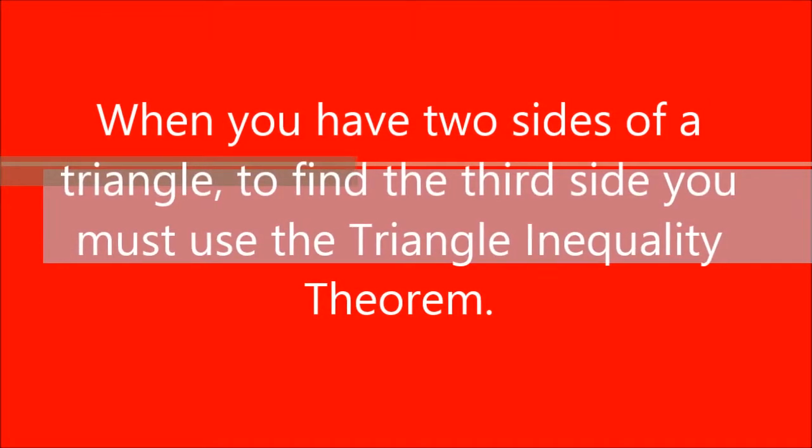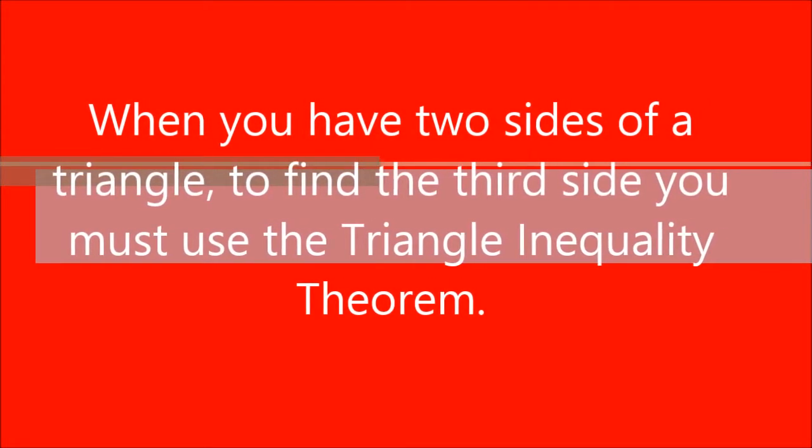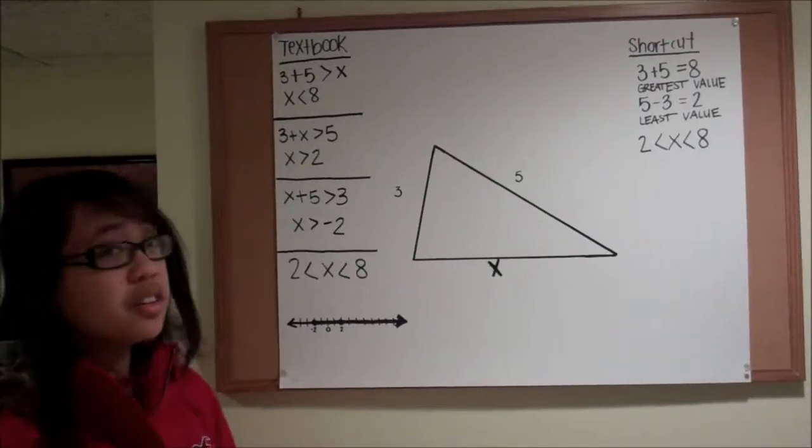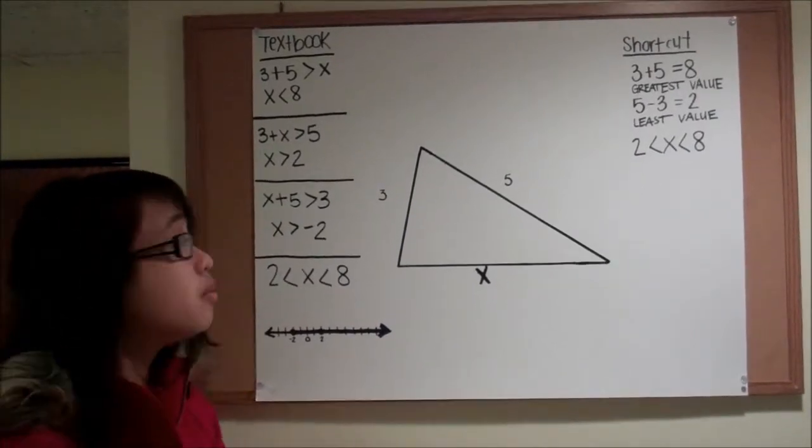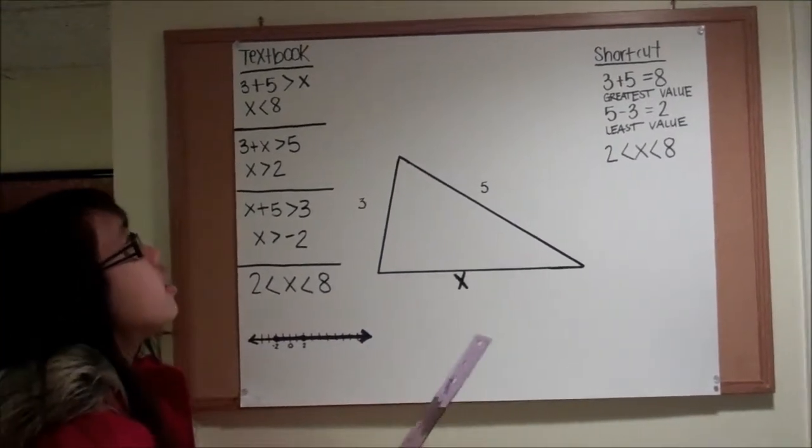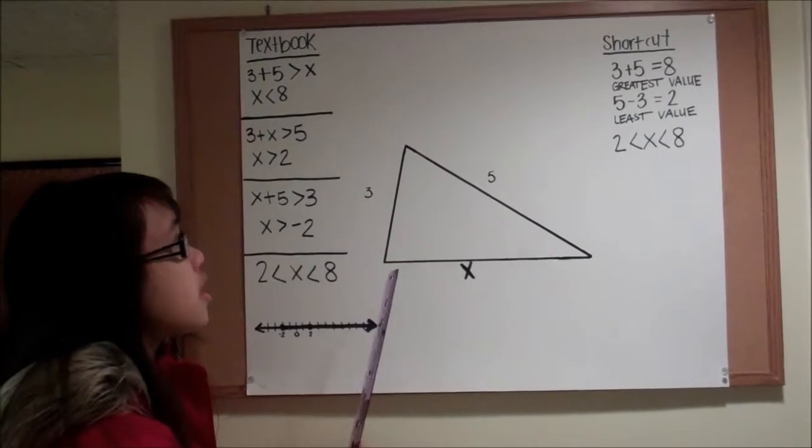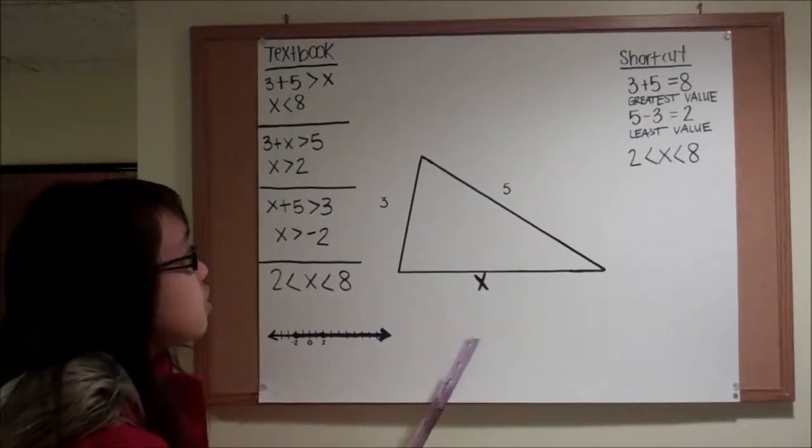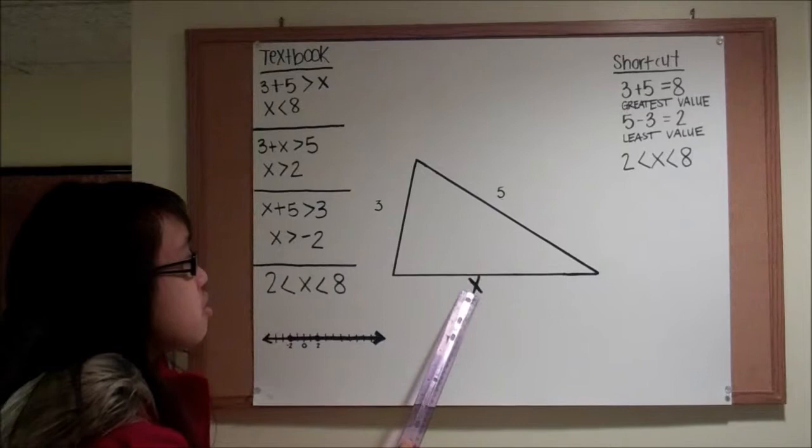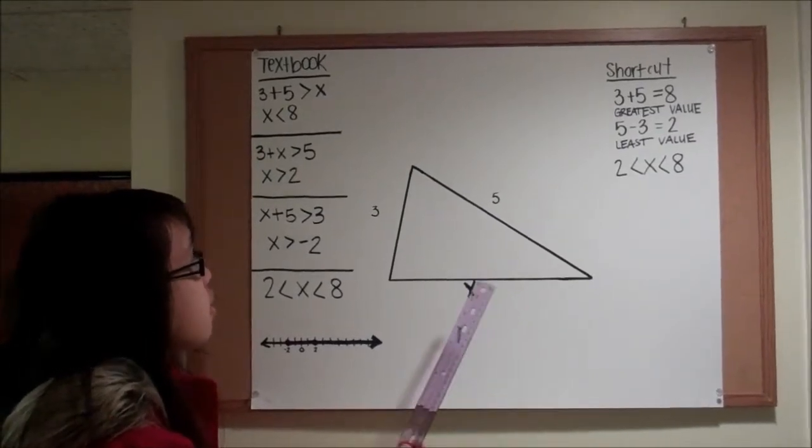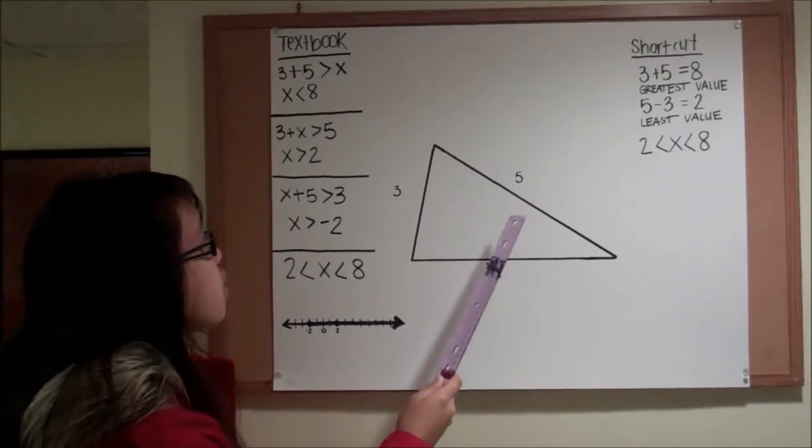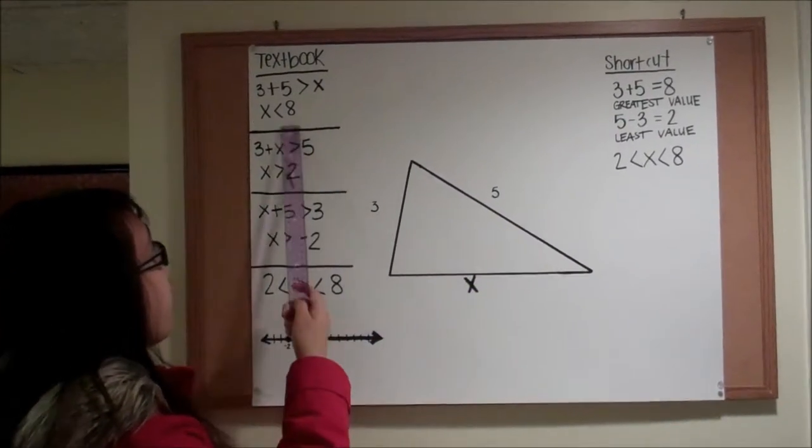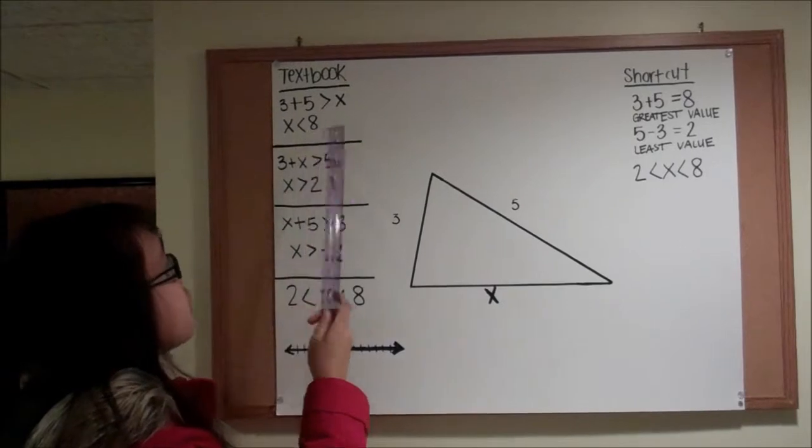When you have two sides of a triangle to find the third side, you must use the Triangle Inequality Theorem. To find the range of the missing side, you would use the theorem. The theorem states that two sides are greater than the third side, so you would substitute X for the side you don't know. Then you would do 3 plus 5 is greater than X, which results in X is less than 8.